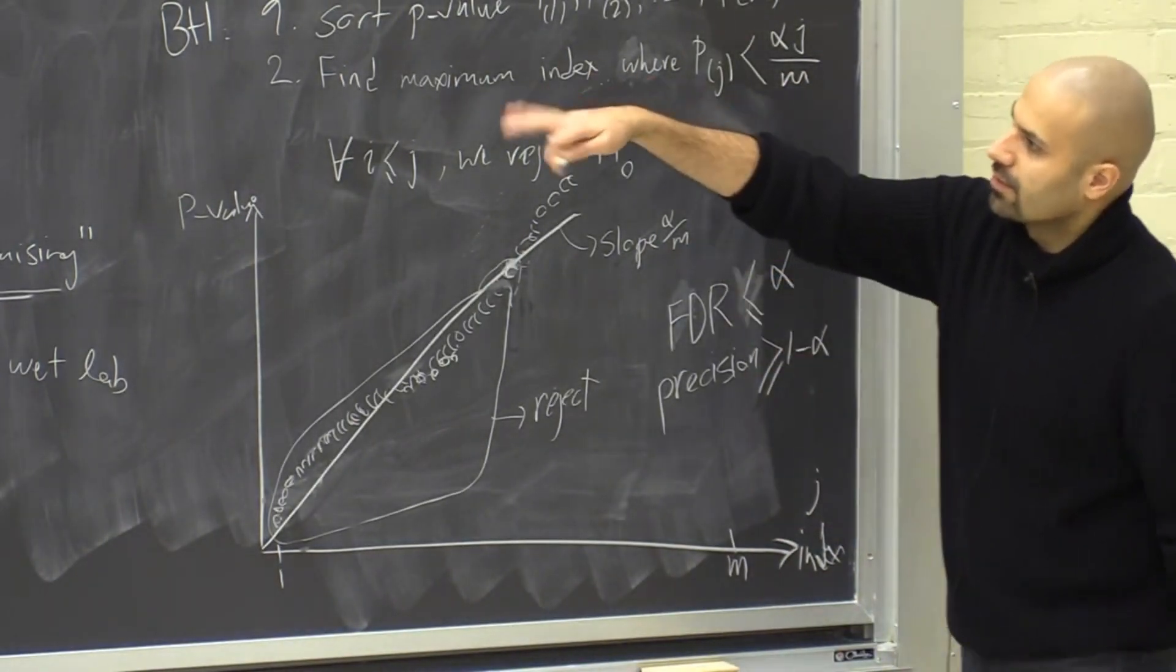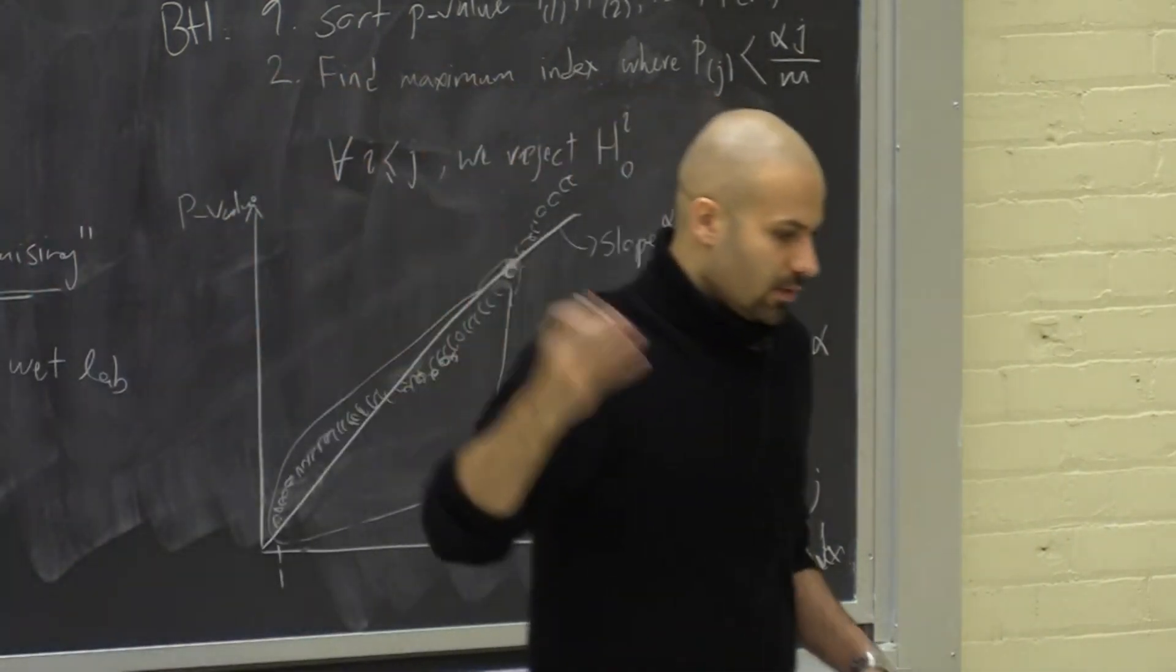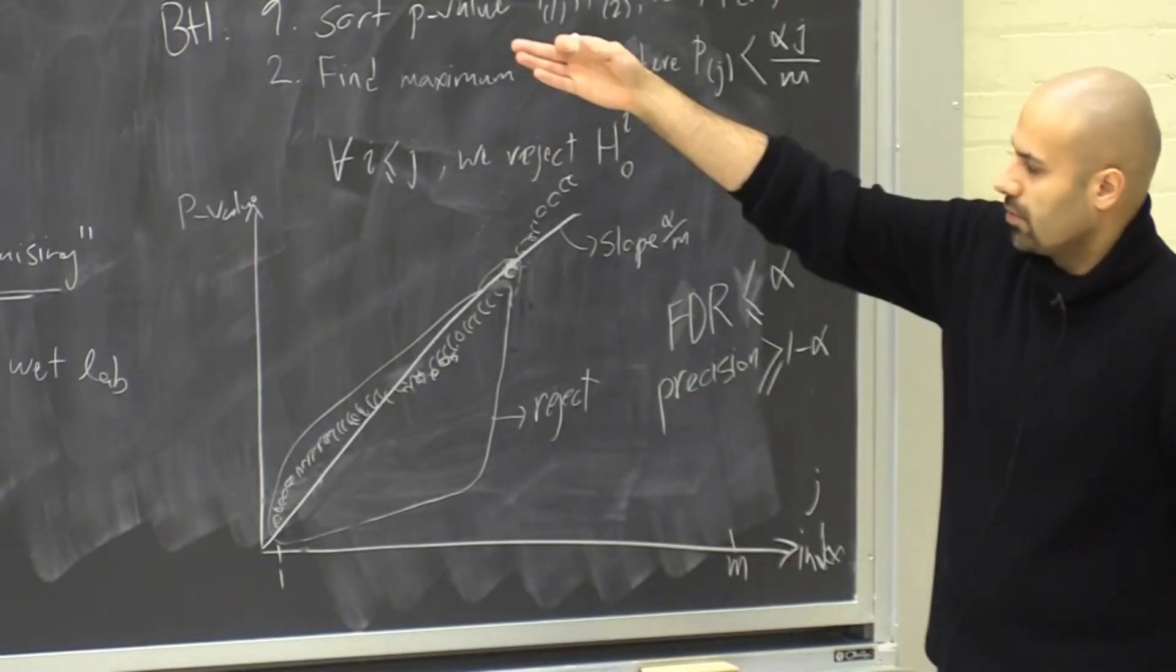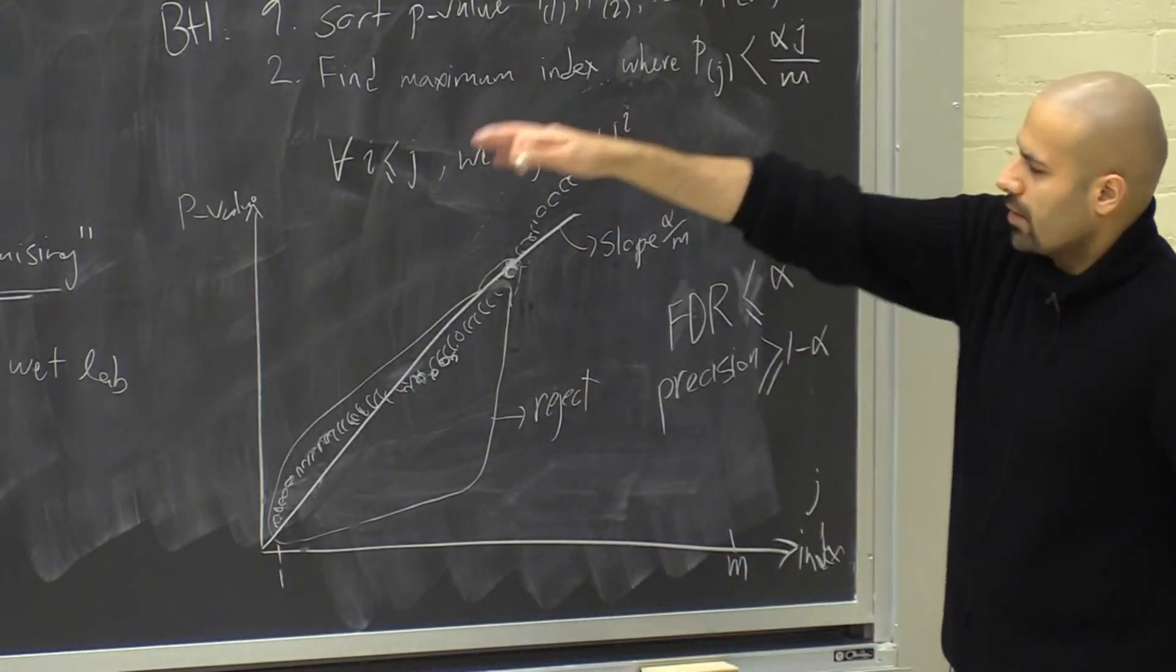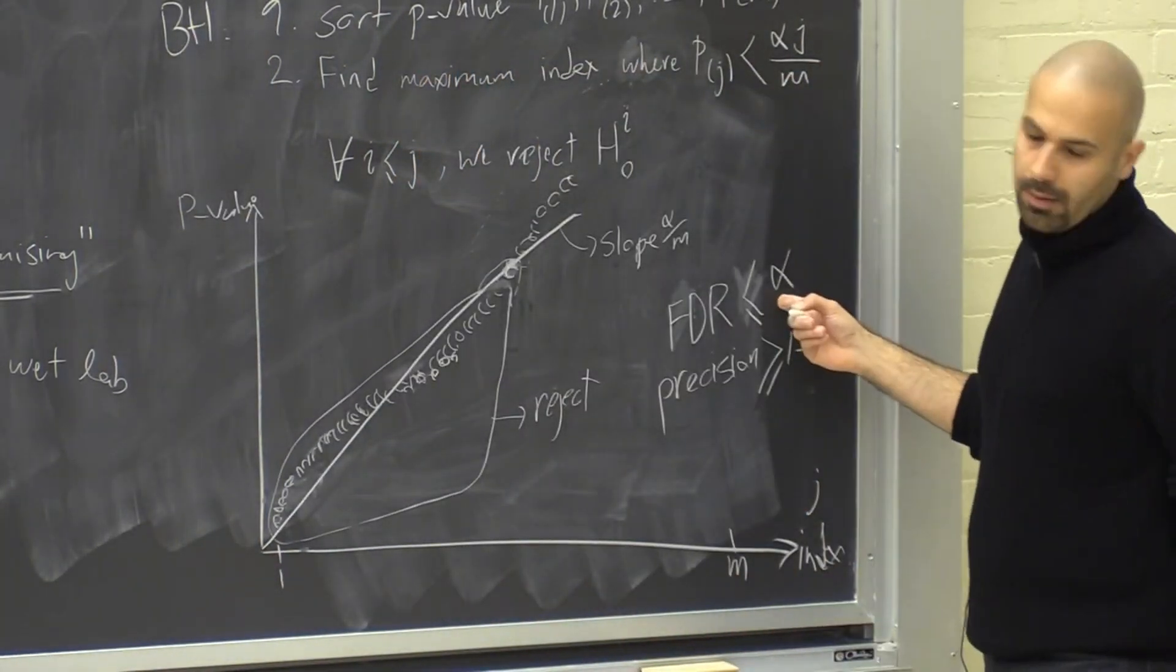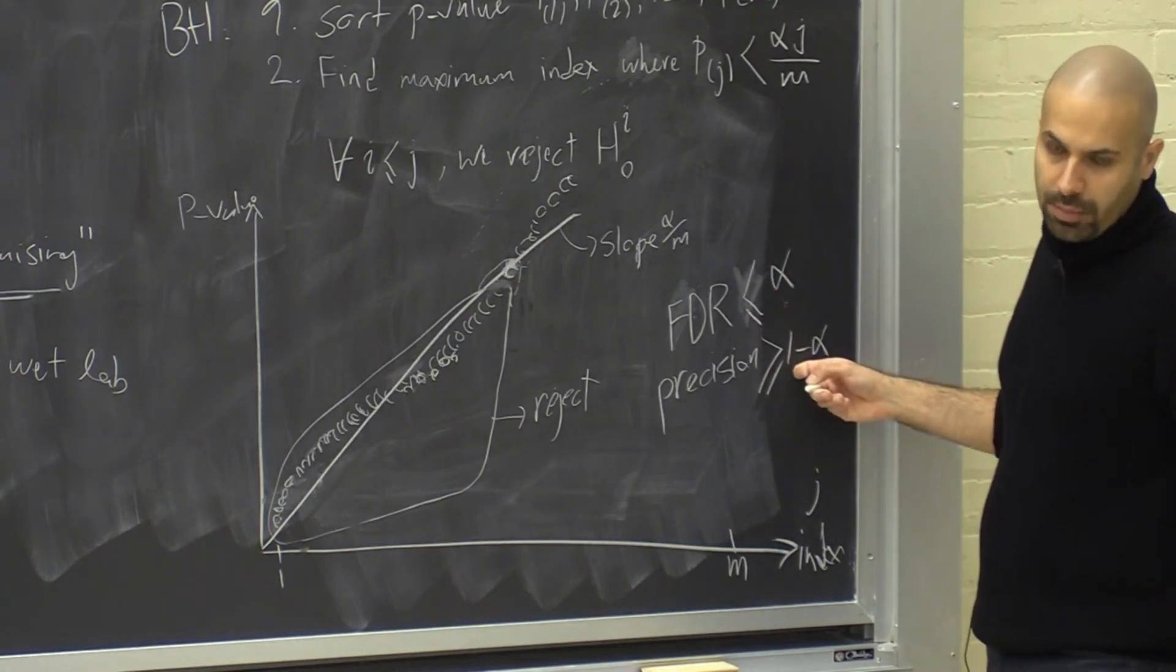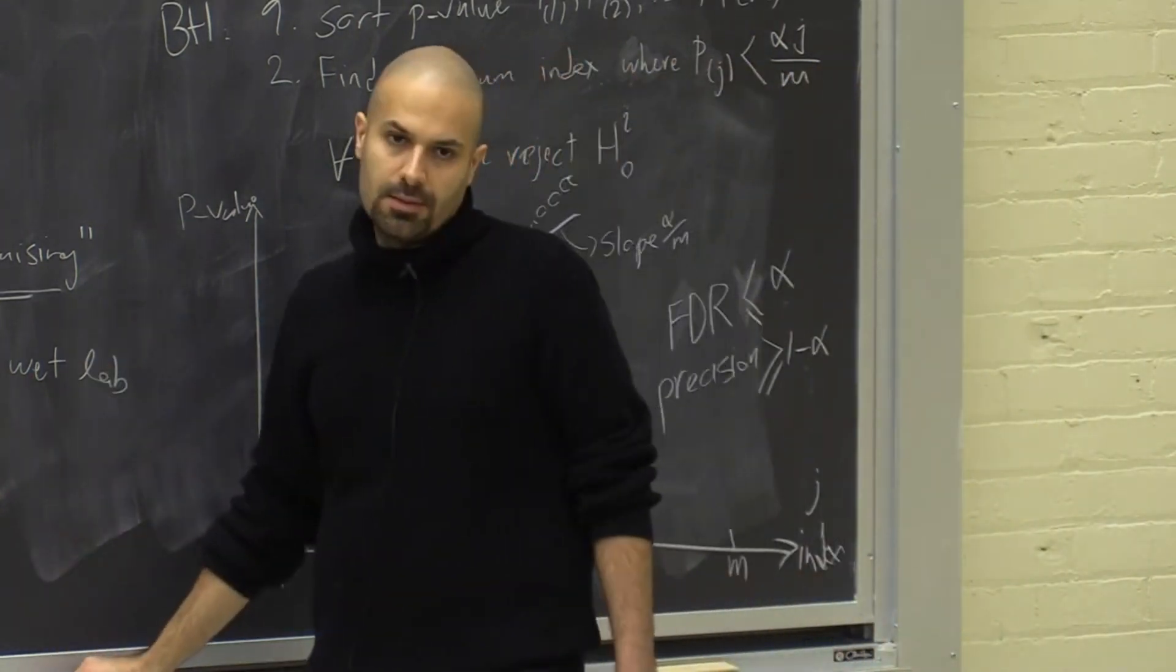So FDR, I guess, is a new concept for some of us. We have it in the confusion matrix. If you check the Wikipedia page of confusion matrix, you see FDR. And FDR is nothing other than one minus precision. So when we say we want max upper bound for FDR, that's the same thing as saying some lower bound for precision. We just don't want to be too imprecise.